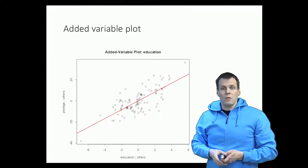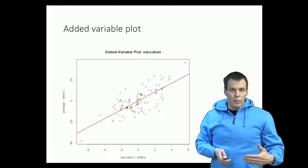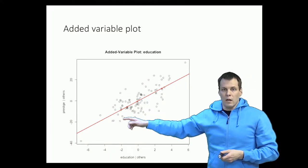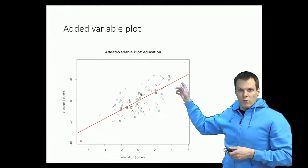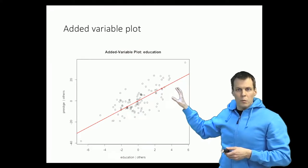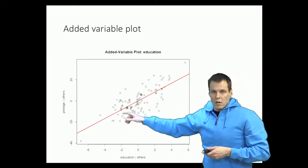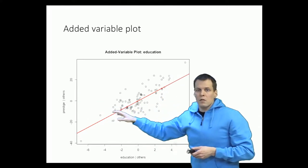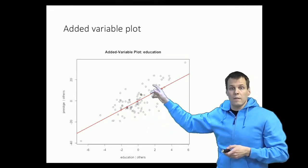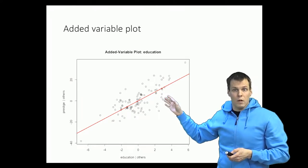This is the first added variable plot, or partial regression plot — why it's called a partial regression plot will become clear shortly. The idea is that we have a line that goes with the data; this is a scatterplot with a regression line. These data points are not raw observations — the x-axis is education conditional on others, and the y-axis is prestige conditional on others. Understanding what these points and the line signify requires understanding how this is calculated, which is actually very simple.